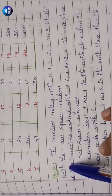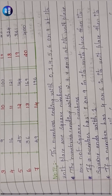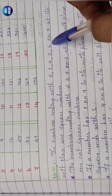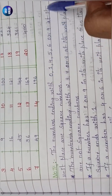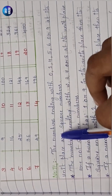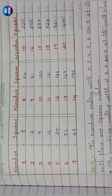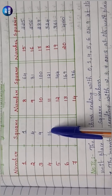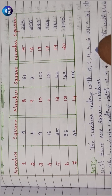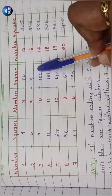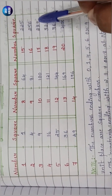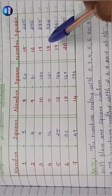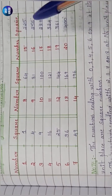Now let's learn the properties of square numbers, which we can apply while solving exercises. The first property says that a number ending with 0, 1, 4, 5, 6, or 9 in its unit place can be a square number. Looking at the table, we can see 1, 4, 9, 6, 5 all appear in the unit places of square numbers — so if a number has these digits in its unit place, it may be a perfect square.